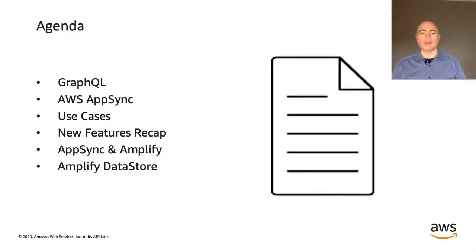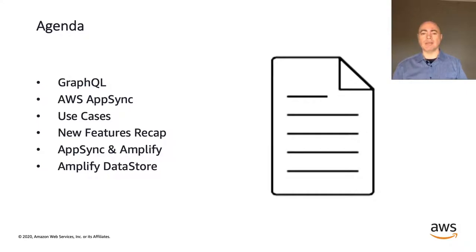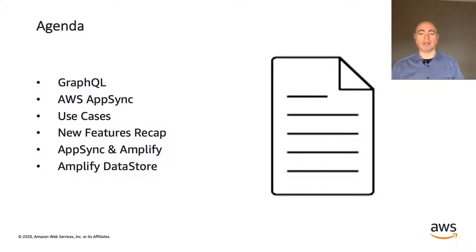Here's what we're going to talk about today to answer these questions. We'll start by quickly reviewing GraphQL as a technology. Then we'll talk about AWS AppSync and how it leverages GraphQL to provide a powerful and flexible serverless API solution. We'll go through some different use cases on how customers are powering their applications with AppSync in the real world and production at scale.